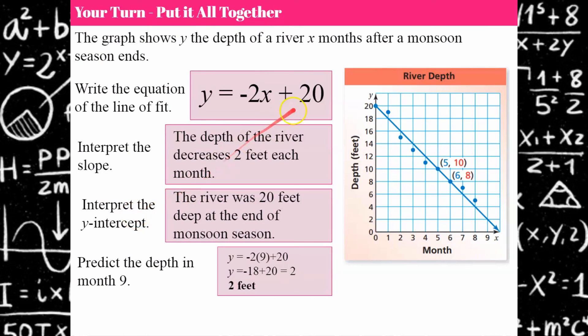Let's interpret the y-intercept. So that y-intercept knowing that that point is 0, 20, right? The river was 20 feet deep at the end of monsoon season.